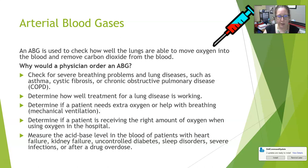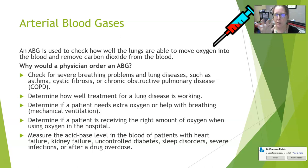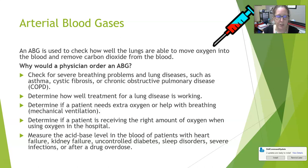An ABG can also determine if a patient needs extra oxygen or help with breathing like mechanical ventilation. There are also options such as putting a patient on a BiPAP machine, which can help with pressures, allow more oxygen in, and pull off CO2 more easily without requiring mechanical ventilation. An ABG helps determine how much help the patient needs.